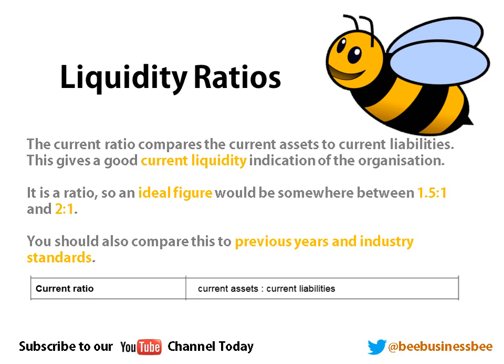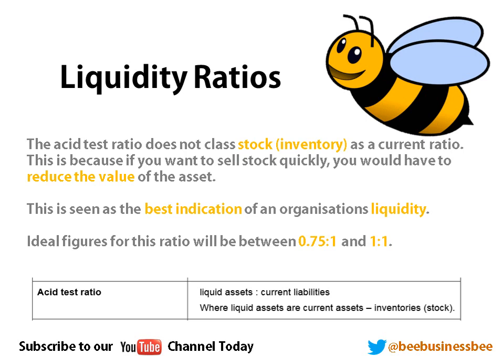Typically you want to compare this figure to previous years and industry standards. Some people in the world of business argue that the current ratio is not the best ratio — they prefer the acid test ratio. The acid test ratio is like the current ratio, except it takes away stock as a current asset. The reason it removes stock or inventory is because if you want to sell stock quickly, you're going to have to discount it, which devalues your asset and doesn't give a true figure.